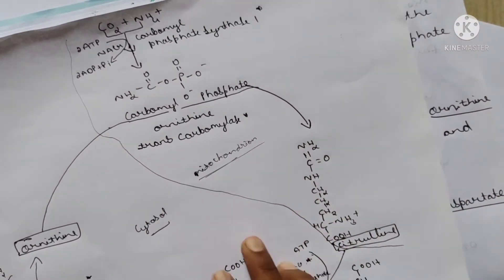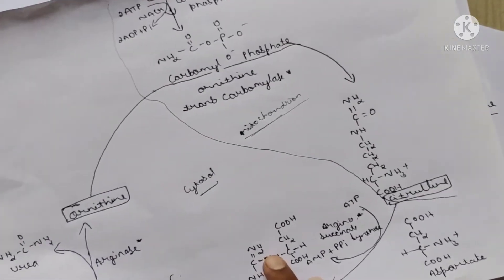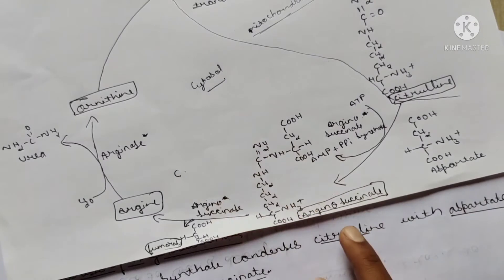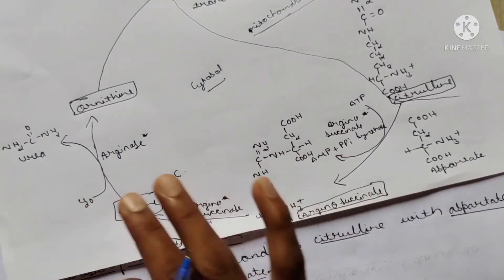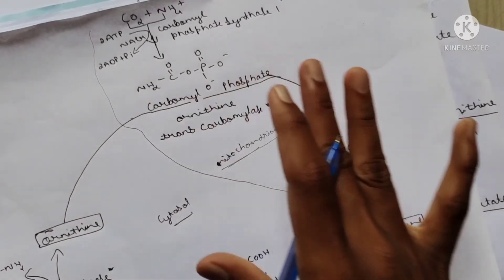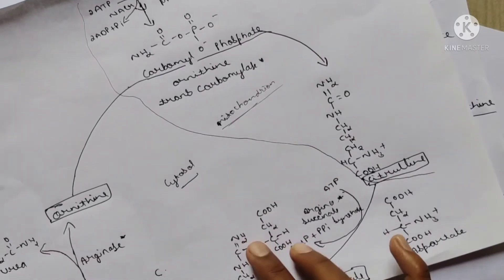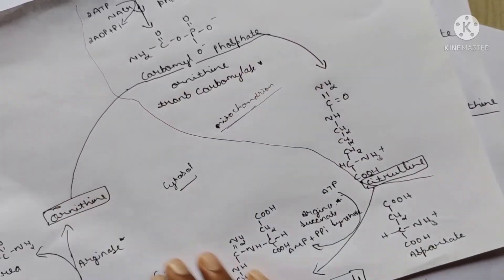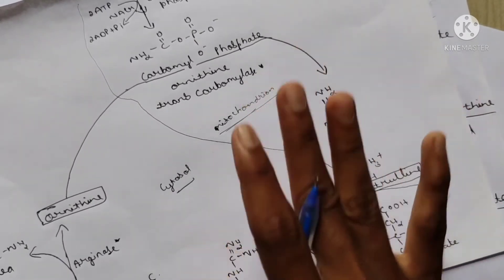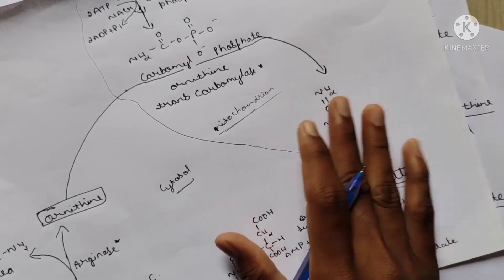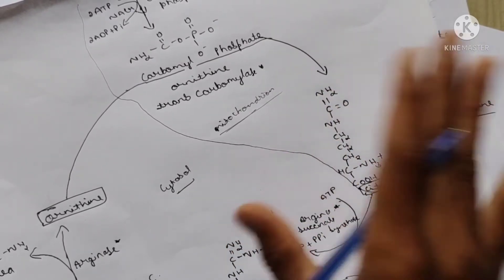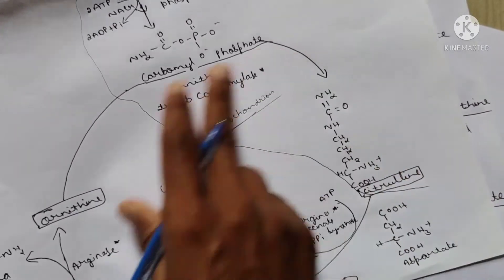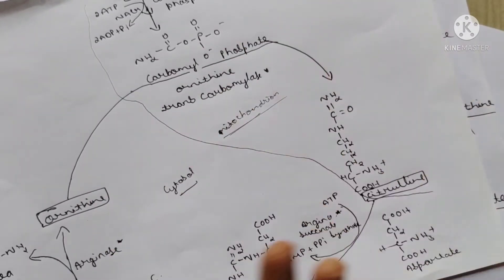Due to the lack of time, remember just two to three key structures: carbamyl phosphate, citrulline, arginosuccinate, and urea - whose structure is NH2-C(=O)-NH2. You need not remember the whole set of structures. My recommendation is to practice three to four structures only, as there are many structures in biochemistry across glycolysis, gluconeogenesis, the Krebs cycle, and the HMP pathway.